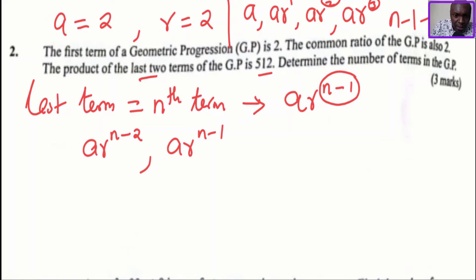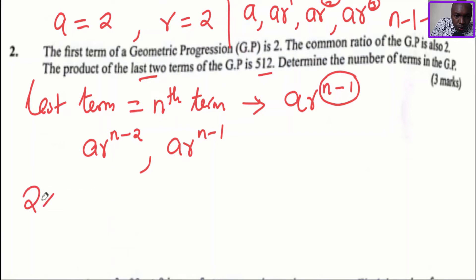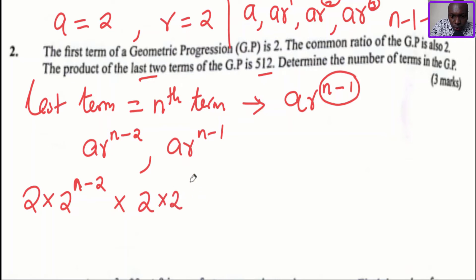Given that the product is 512, we insert the first term and common ratio. This gives 2 times 2^(n-2), multiplied by 2 times 2^(n-1). This product is supposed to give 512, and this is what we solve.